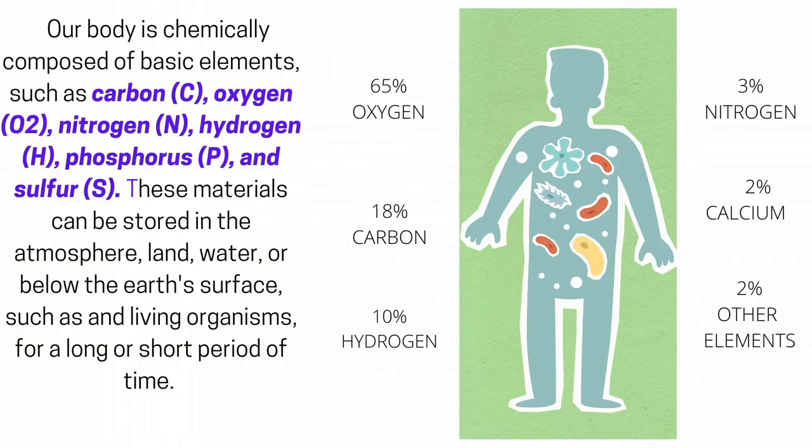Our body is chemically composed of basic elements, such as carbon, oxygen, nitrogen, hydrogen, phosphorus, and sulfur.